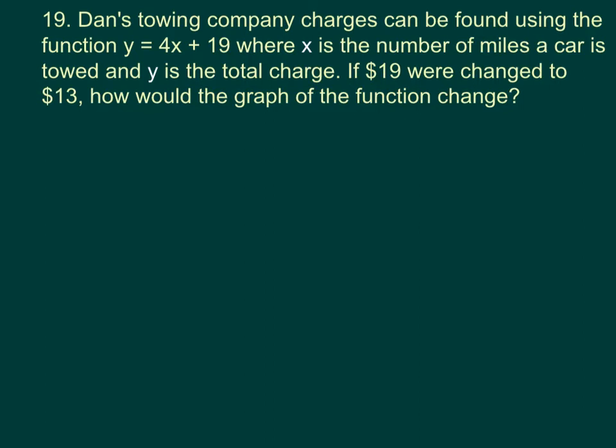Well, this one I think we should draw. So if I have a graph, and I have an equation, Y equals 4X plus 19, then I know that this plus 19 is where it crosses the Y axis. So I'm going to pretend that this is 19. I also know that my slope is 4.